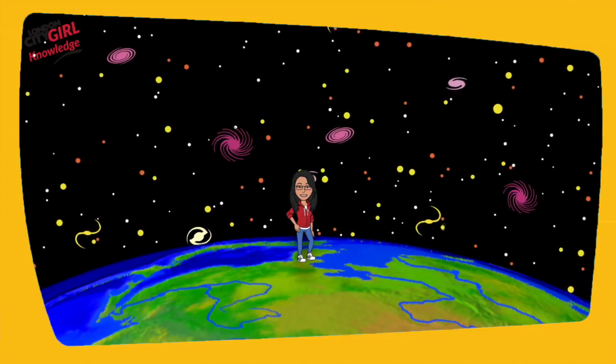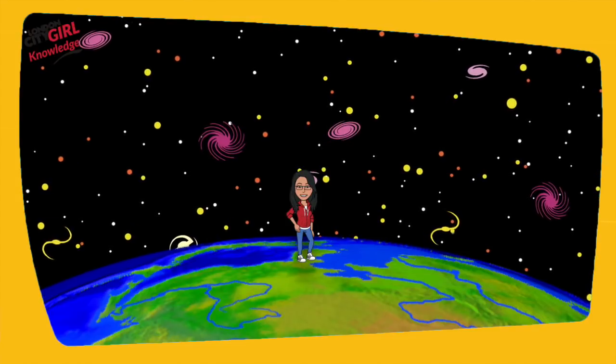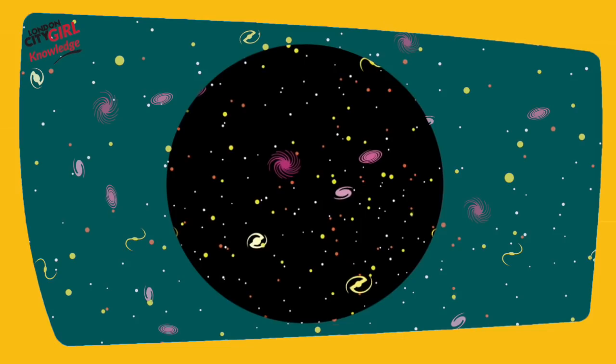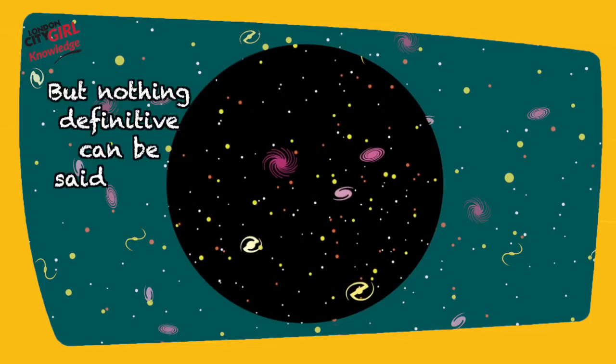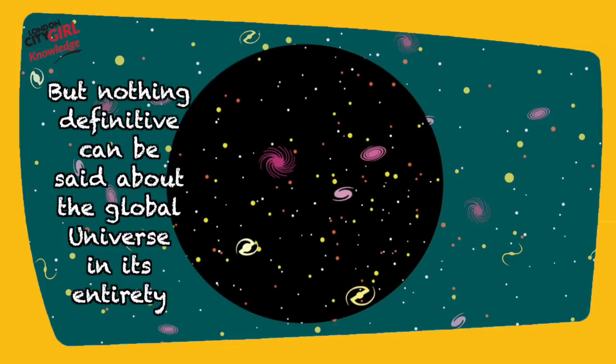We may be that ant and the universe is so massive that whatever we can measure will appear flat to us. So in summary, experimental data seems to indicate that our observable universe is very close to being flat, but we can't state that definitively about the global universe in its entirety.